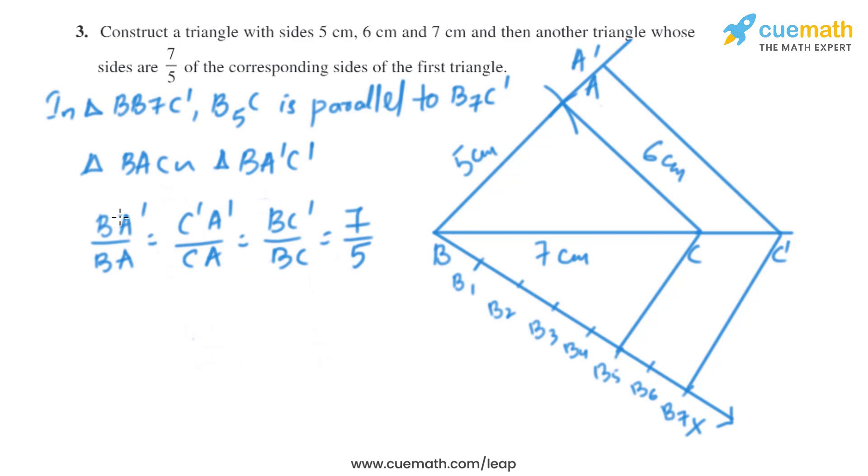And by the similarity criteria, triangle BAC is similar to triangle BA dash C dash, so we'll get BA dash by BA equals C dash A dash by CA equals BC dash by BC equals 7 by 5.